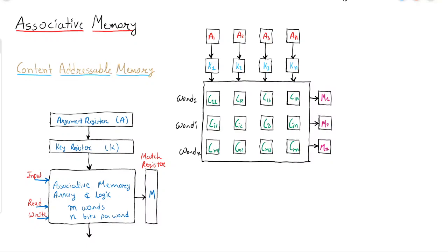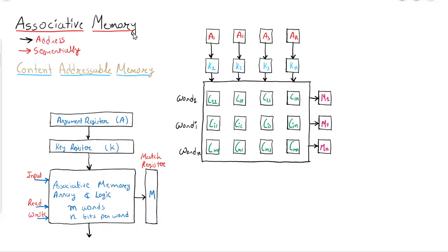Nowadays, solid state drives have very high bandwidth and very low access time compared to hard drives, so we are not focusing much on auxiliary memory. Let us start our discussion with associative memory. In a normal scenario, whenever you try to access any content of memory you retrieve the content using an address. But many times, when the CPU wants to search something in memory, it has to search linearly or sequentially — one by one location is searched and then the appropriate data is retrieved.